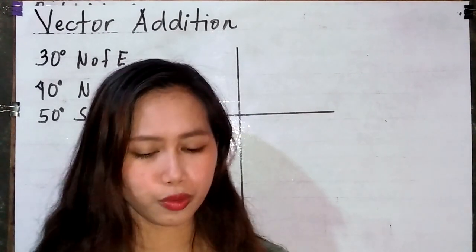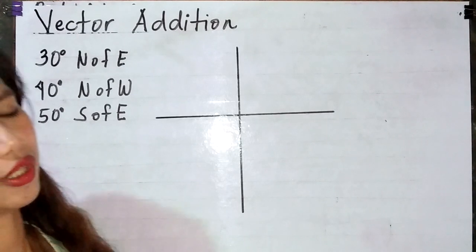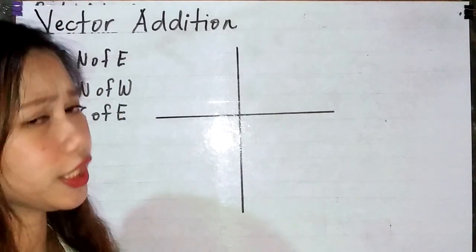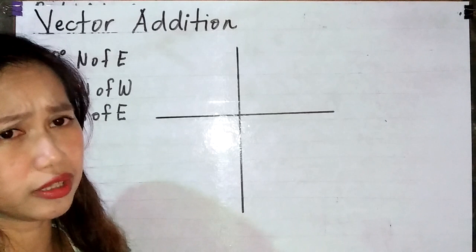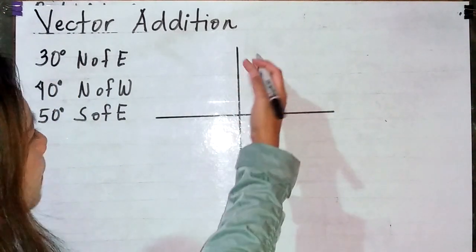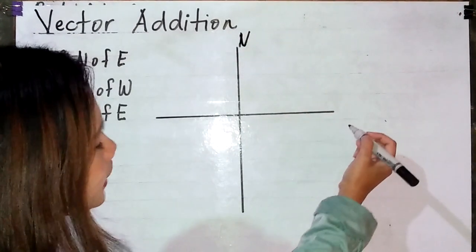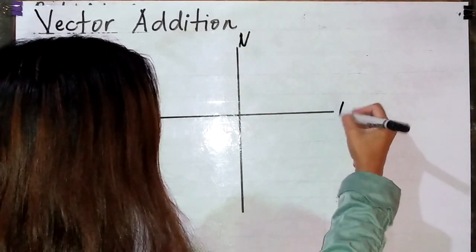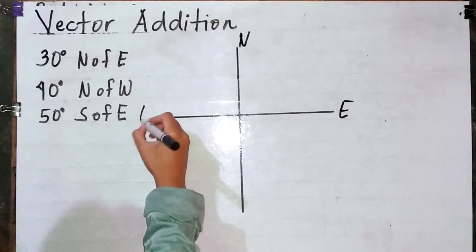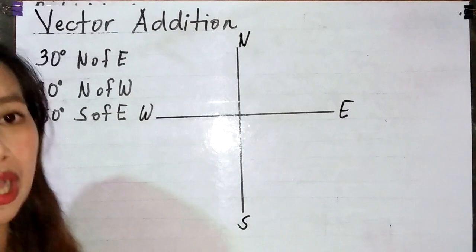For us to understand vector addition, let's review our directions and associate them with the Cartesian plane. For the positive y-axis, let's have north. Positive x-axis is east, negative x-axis is west, and the negative y-axis is south.